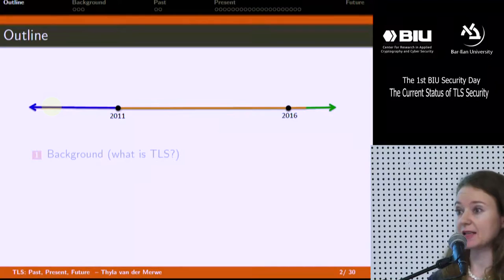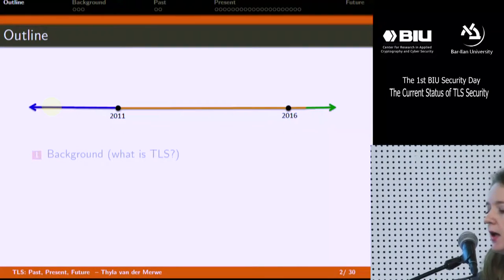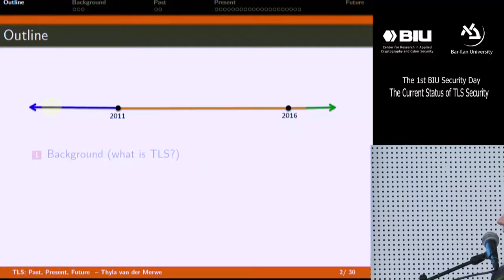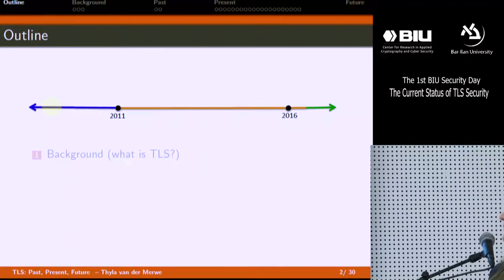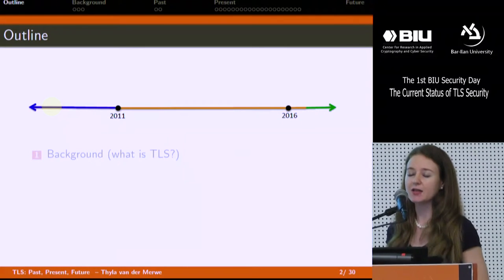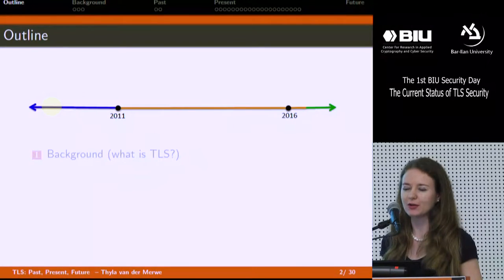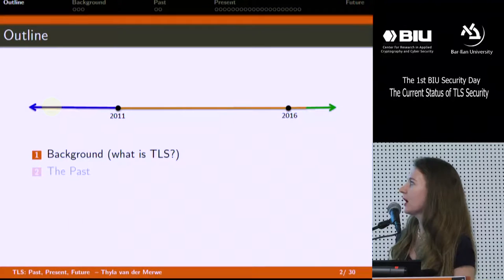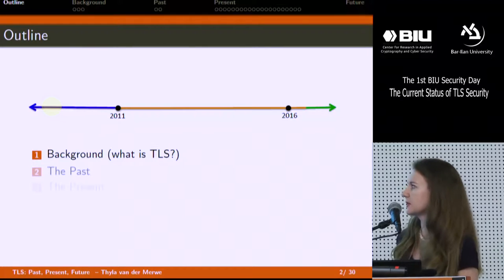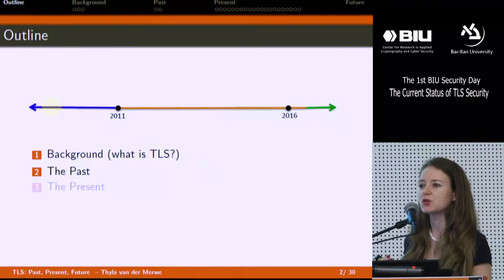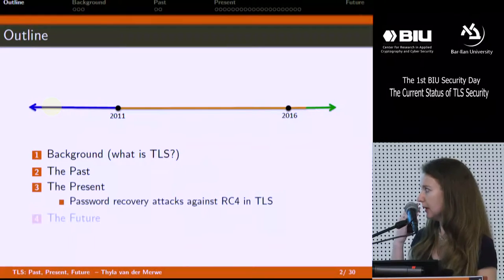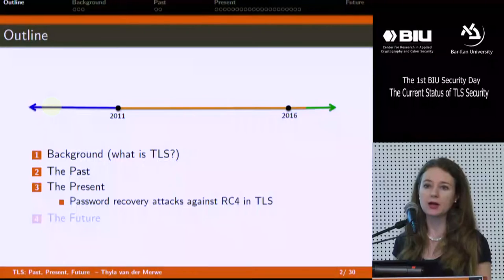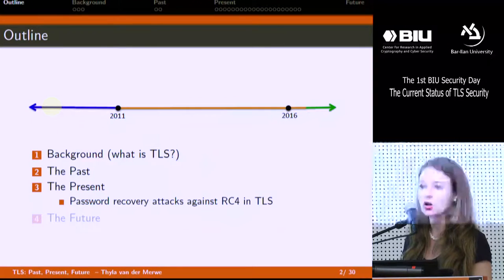If we think about this as our attack timeline — our currently very sparsely populated attack timeline — I'm going to consider everything that happened before 2011 as the past. I'm going to think about everything that happened between 2011 and now as the present, and I'll treat the future as starting from tomorrow. Before we start on this TLS attack adventure, I'll go through a bit of background on what TLS is, then talk about what was going on in the protocol prior to 2011, then what was happening between 2011 and now — including password recovery attacks against RC4 in TLS.